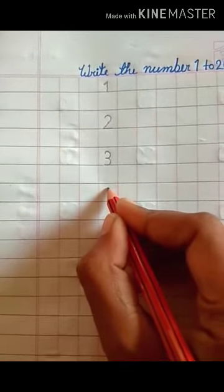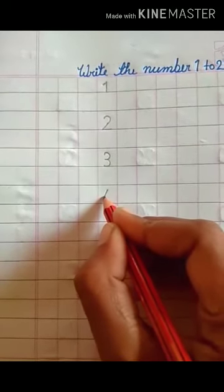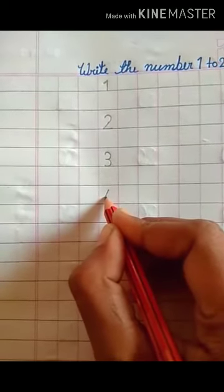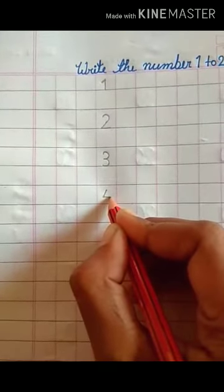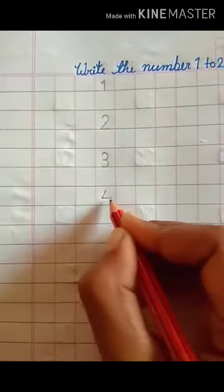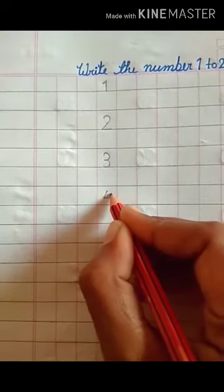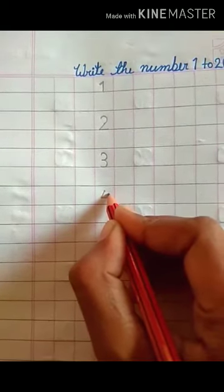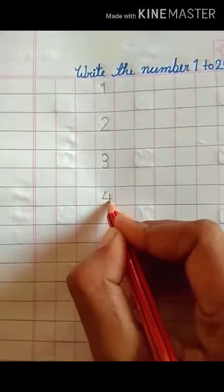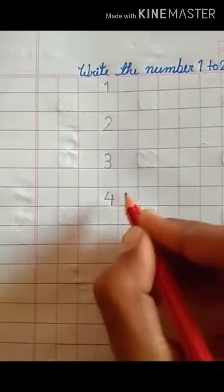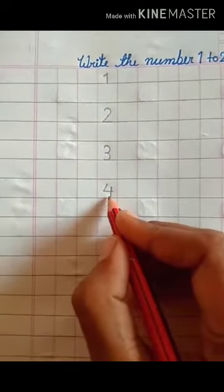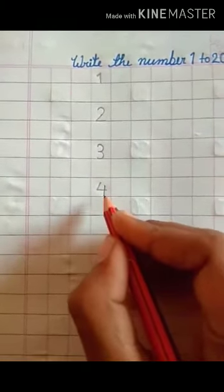Draw slanting line, then draw slipping line, then draw standing line. This is number 4.